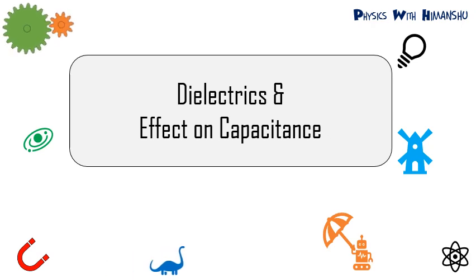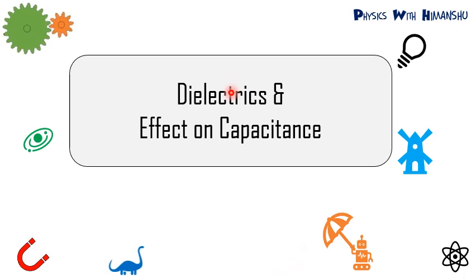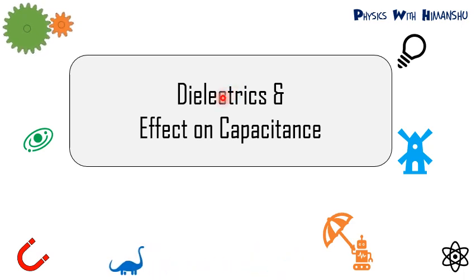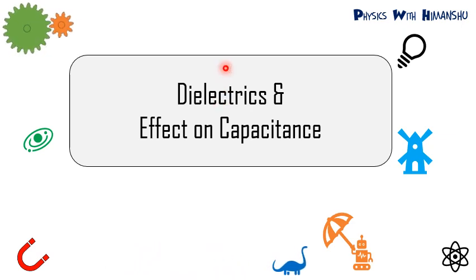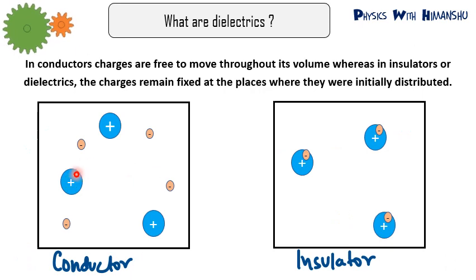Our next topic is dielectrics and its effect on capacitance — how we can change the value of capacitance of a capacitor with the help of a dielectric, what dielectrics are, how they are classified, and how to use dielectrics to increase capacitance. All these things we are going to discuss in this lecture.